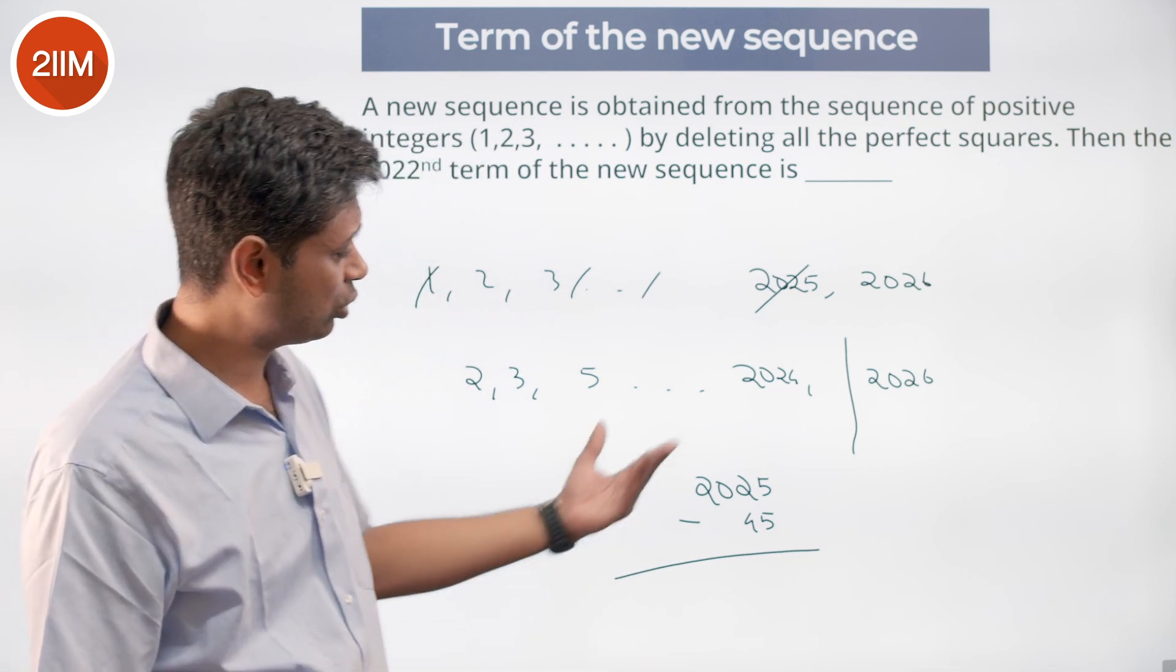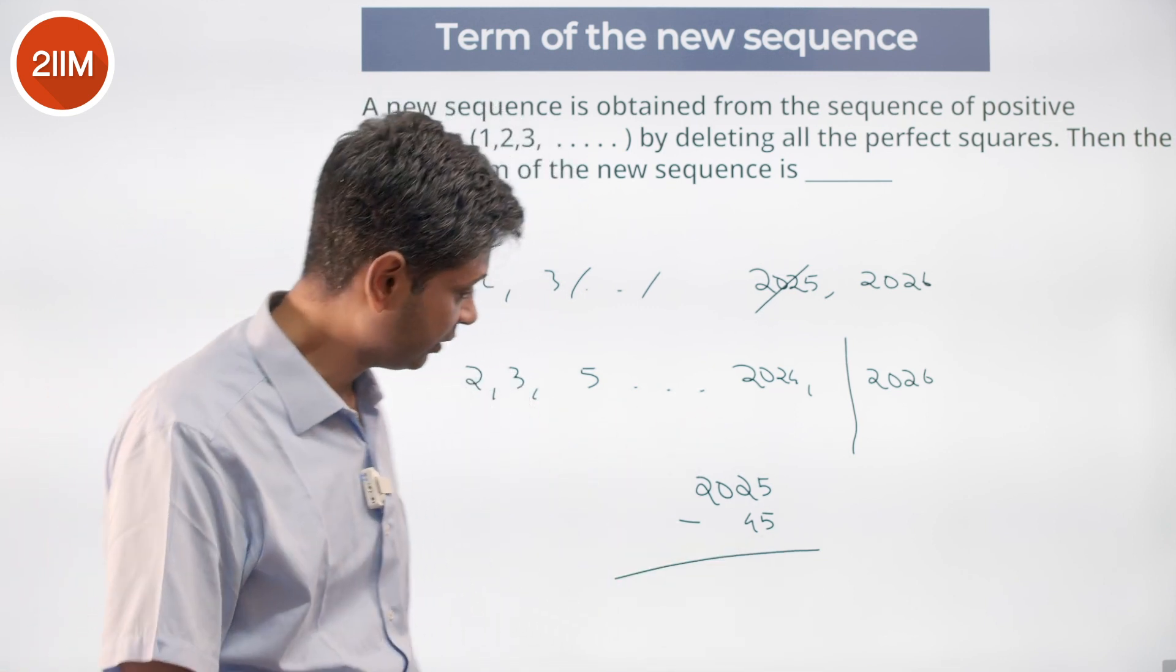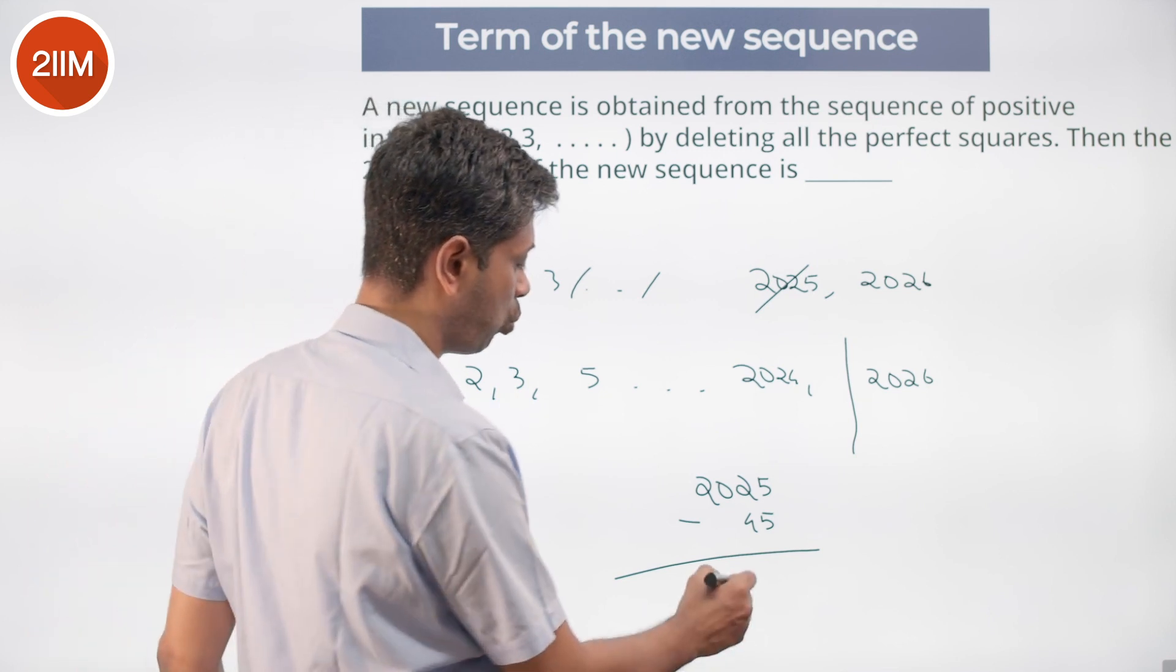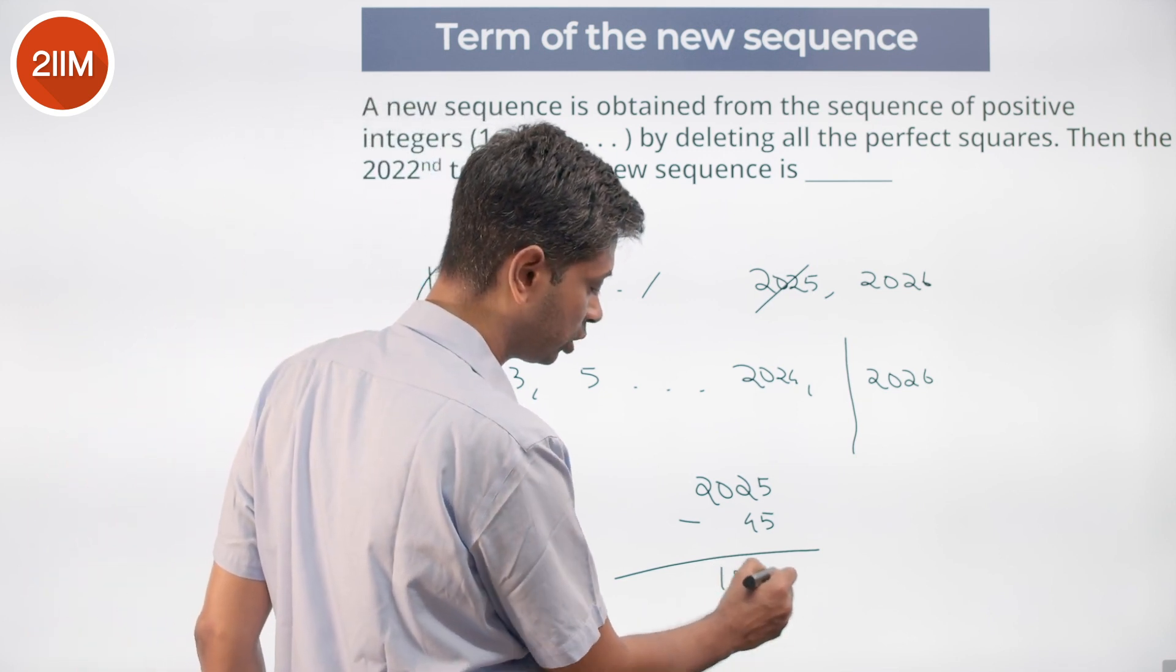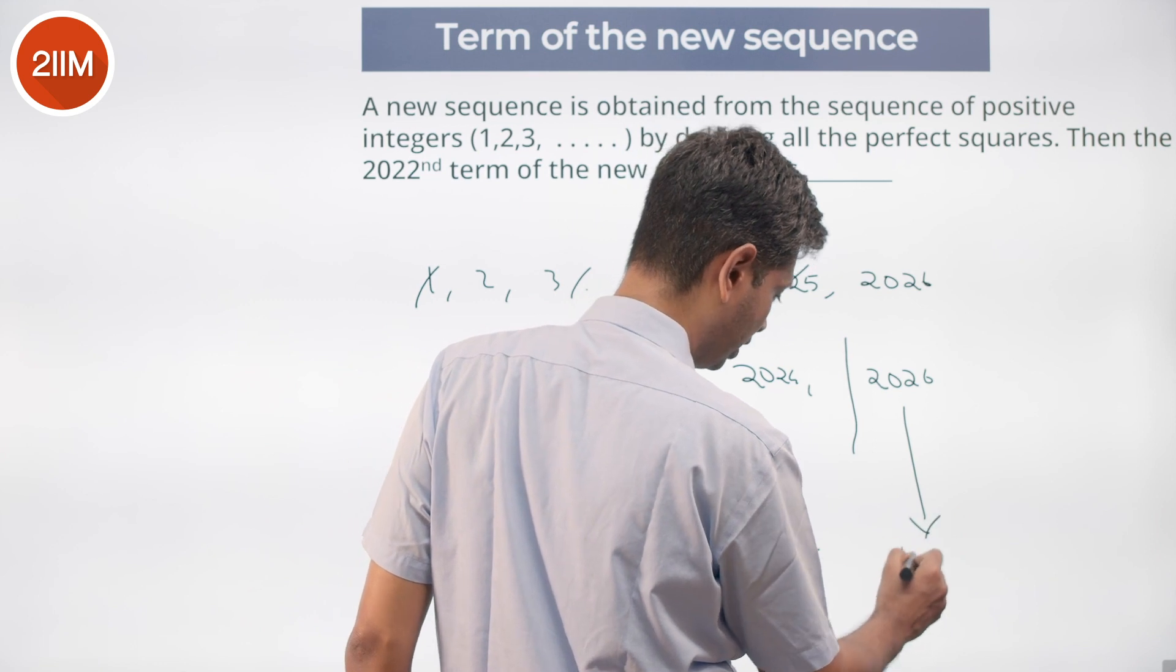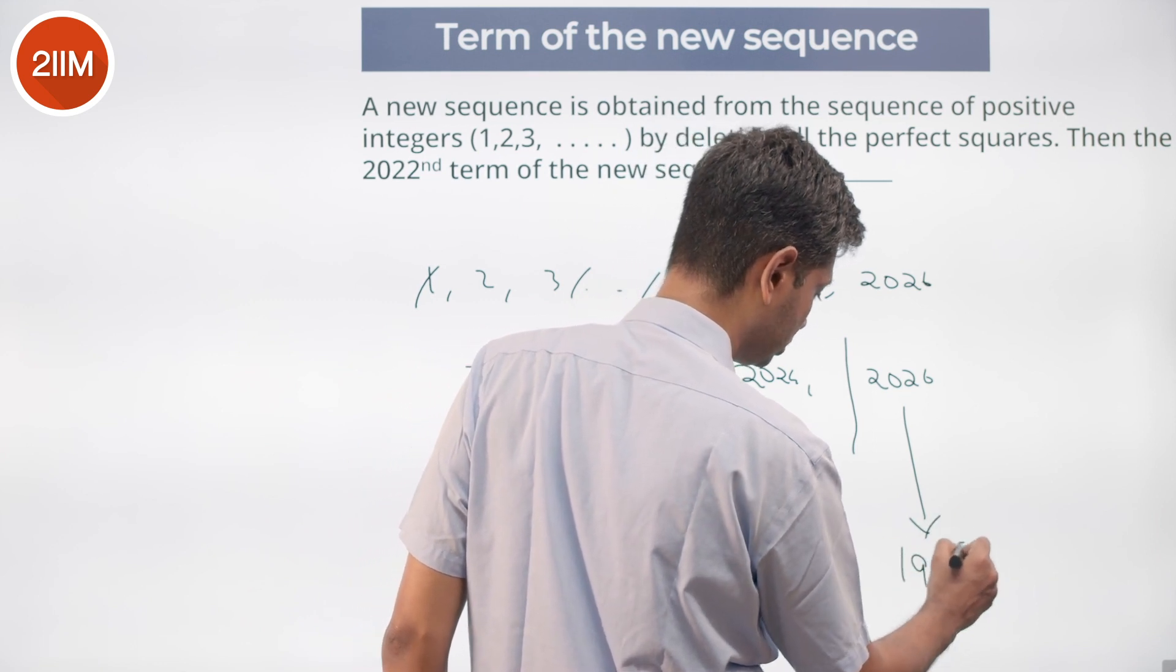Why minus 45? 45² is 2025. So if I subtract this, this is 1980 terms. So 2026 is the 1981st term.